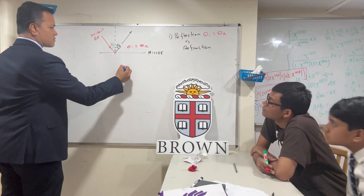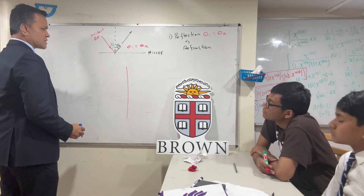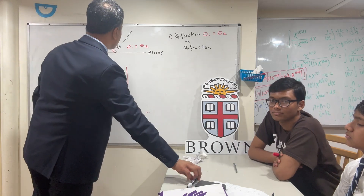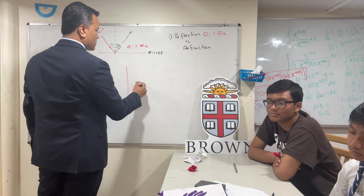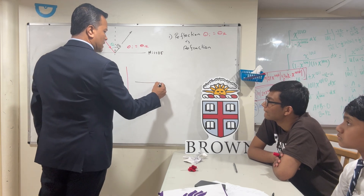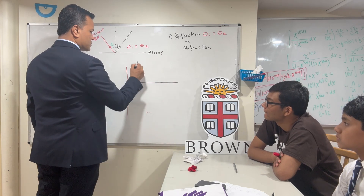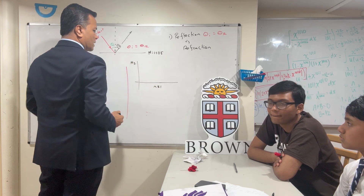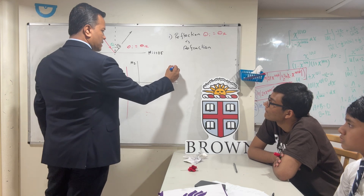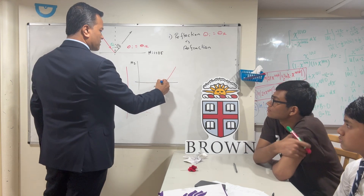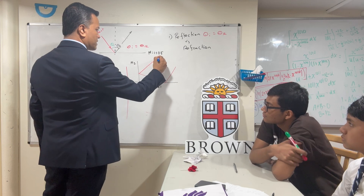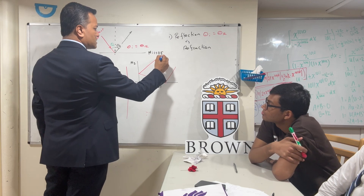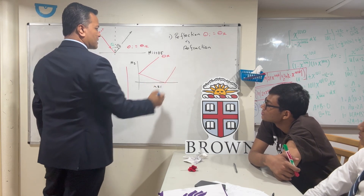I'm going to give both of you two problems — let's see who can do it faster. When you solve this problem, make sure you use the normal line. I have mirror one and mirror two. An incident ray comes in, bounces off, and bounces off again. I want you to find what is the reflected angle.